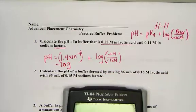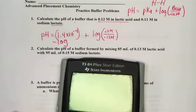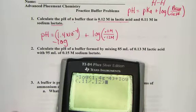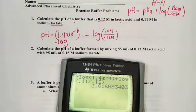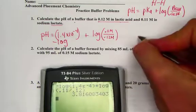So, on our calculator, we will need to hit negative log of the Ka value we found, 1.4 E negative 4, plus the log of the ratio of 0.11 divided by 0.12, gives us a pH reading of 3.82 pH units.